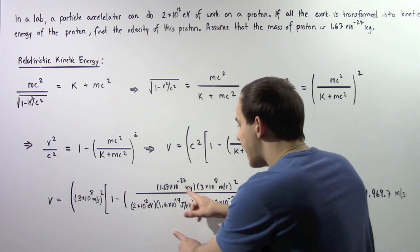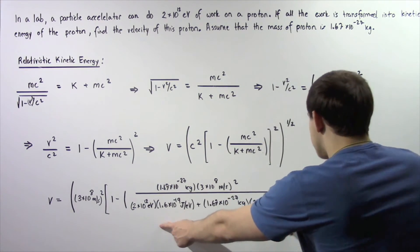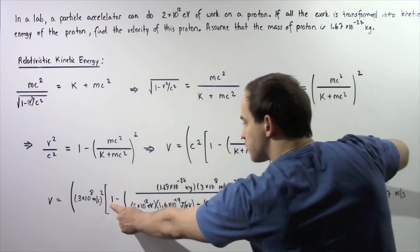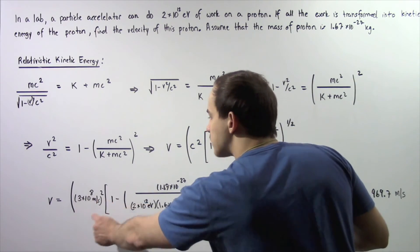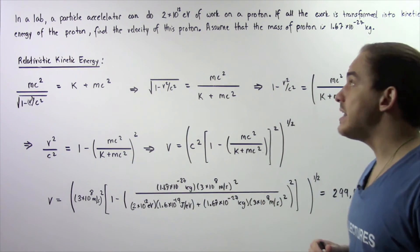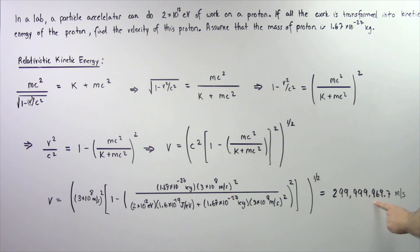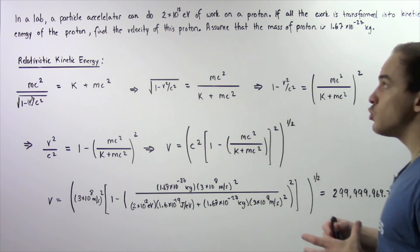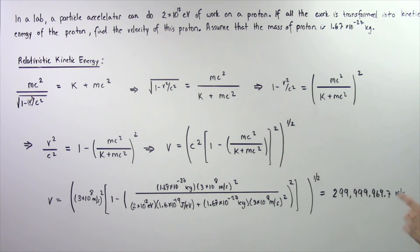The electron volts cancel and we're left with joules. We multiply, divide, take the square of that term, subtract 1 and that quantity, multiply by the square of the speed of light in a vacuum, and finally take the square root of the entire quantity. We find that the velocity of our proton is 299,999,969.7 meters per second — meaning we are able to accelerate that proton to a velocity that is very close to the speed of light in a vacuum.